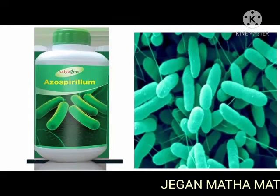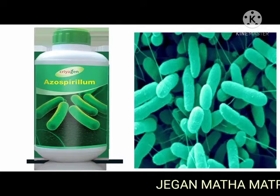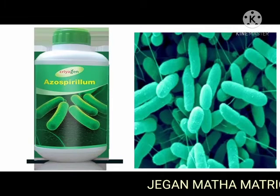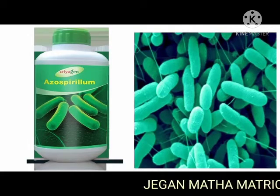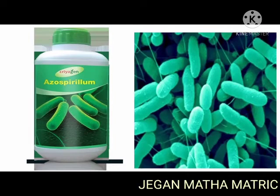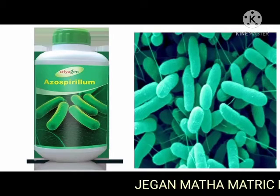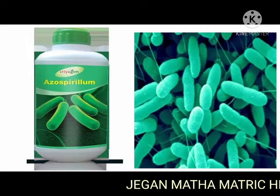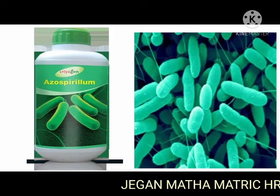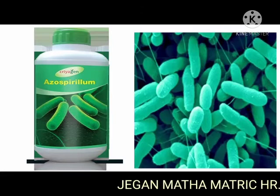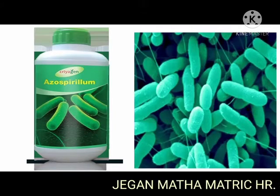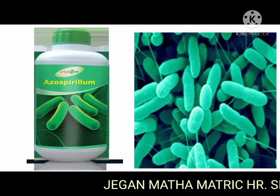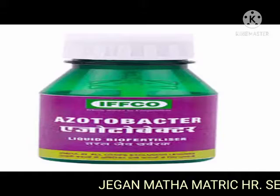Azospirillum has the ability to use atmospheric nitrogen and transport this nutrient to the crop plants. It is inoculated on maize, barley, oats, and sorghum crops. It increases productivity of cereals by 5 to 20%, millets by 30%, and fodder by over 50%.